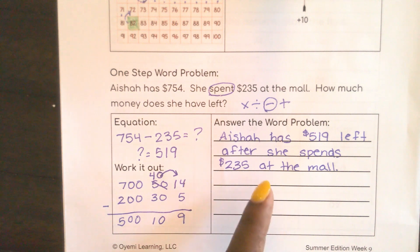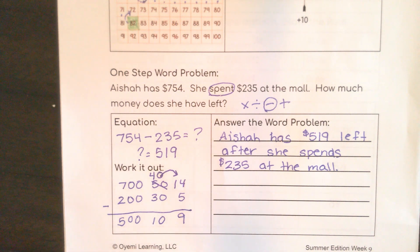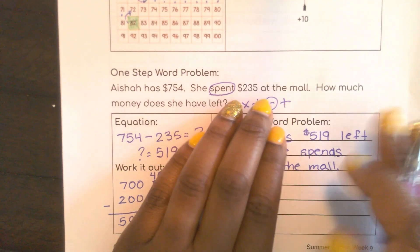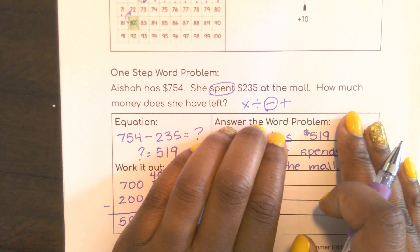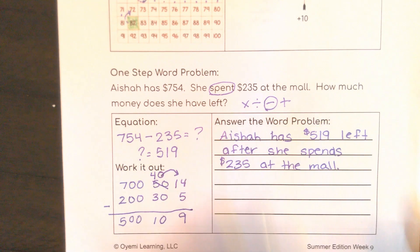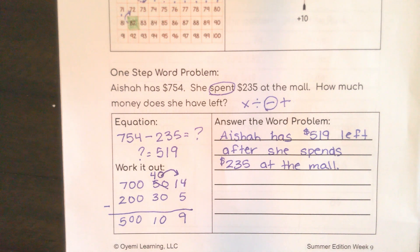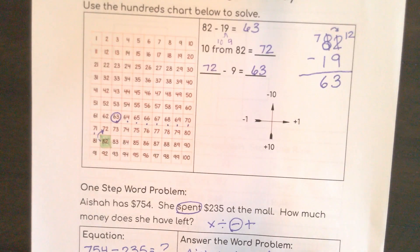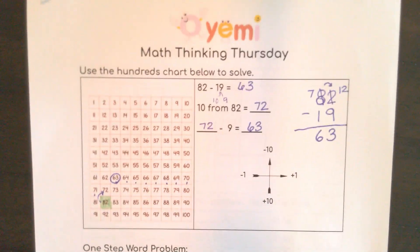Notice here how we answered the word problem. Make sure you do that at school — in class. Don't just put that the answer is 519 as your final answer. Make sure you answer the question. Well, I can tell we had a Math Thinking Thursday, and I will see you soon.